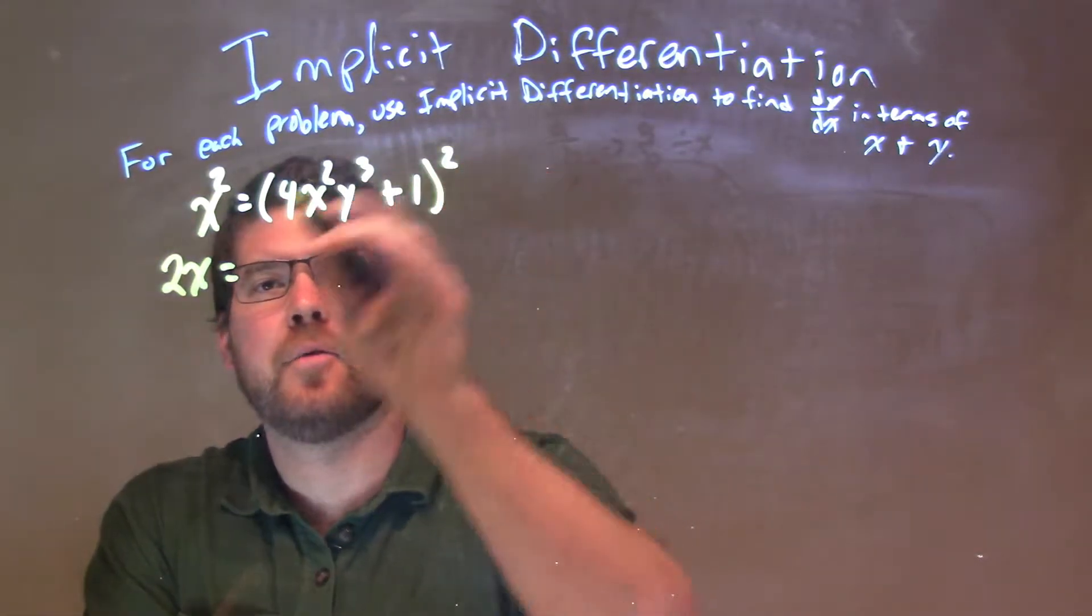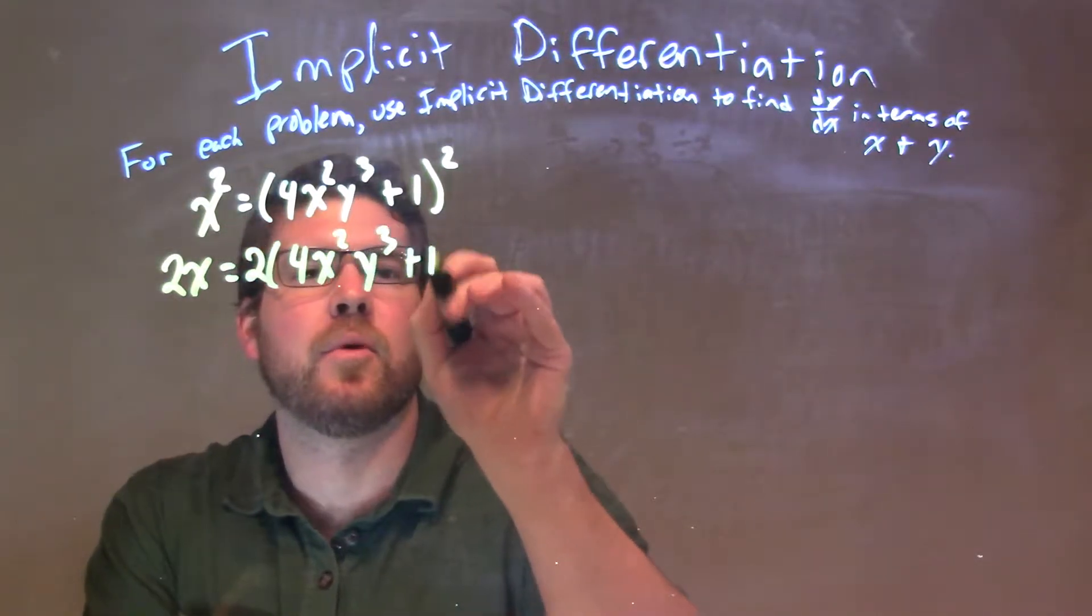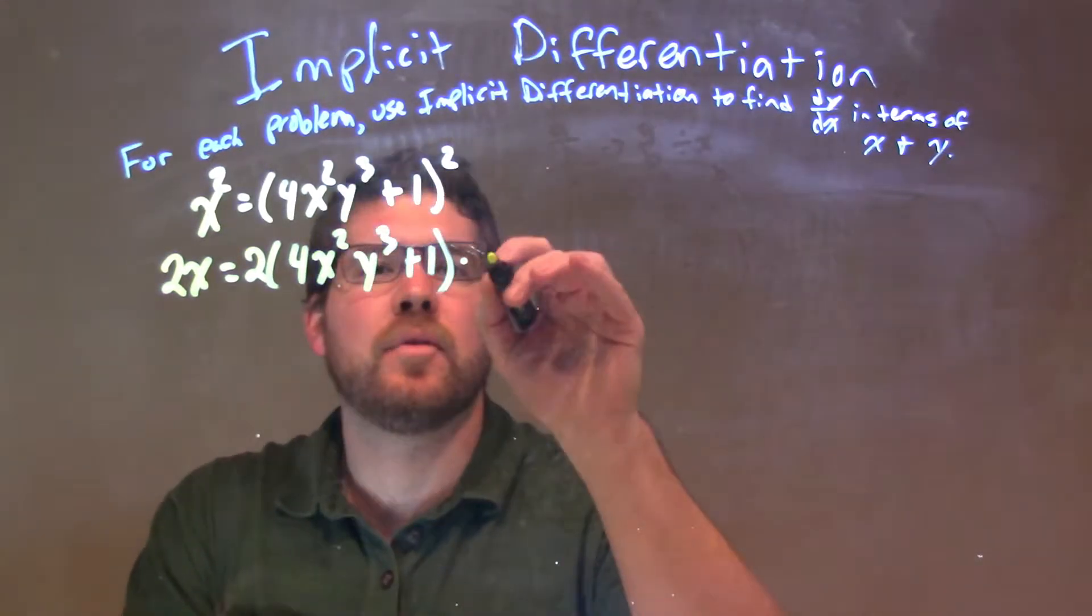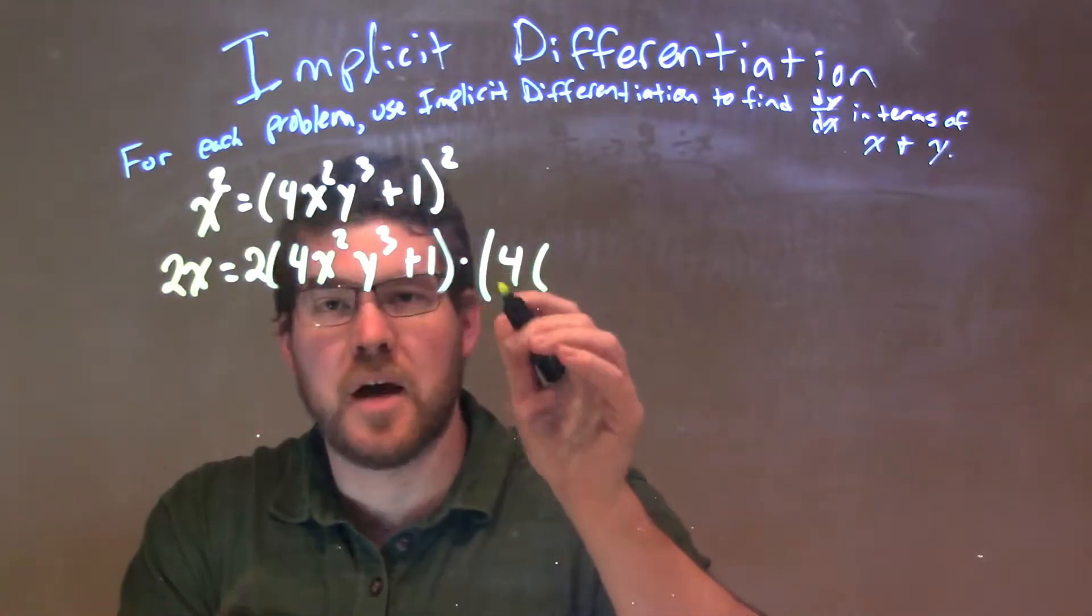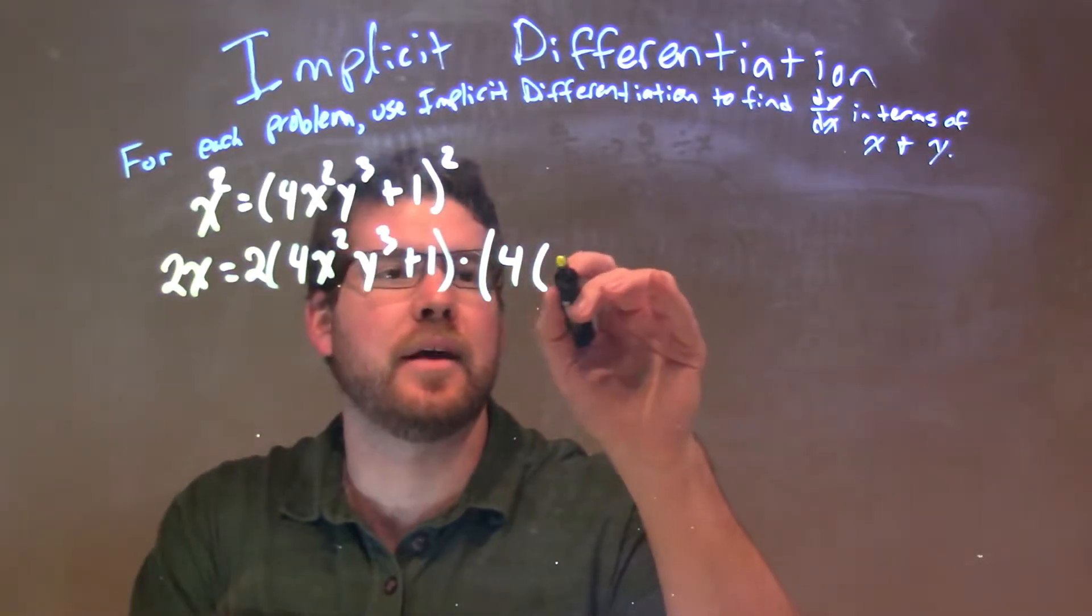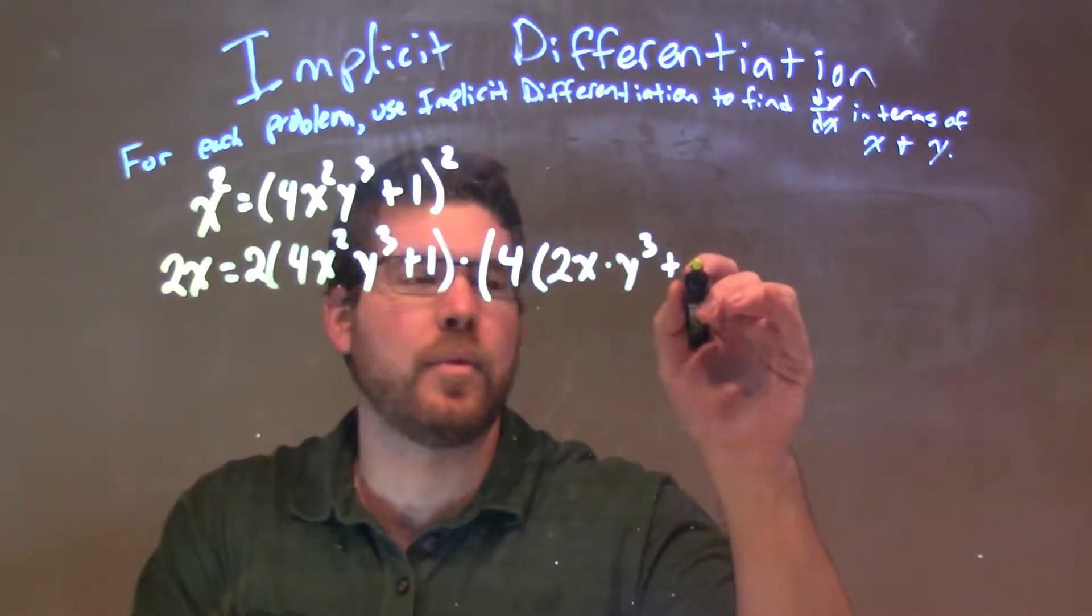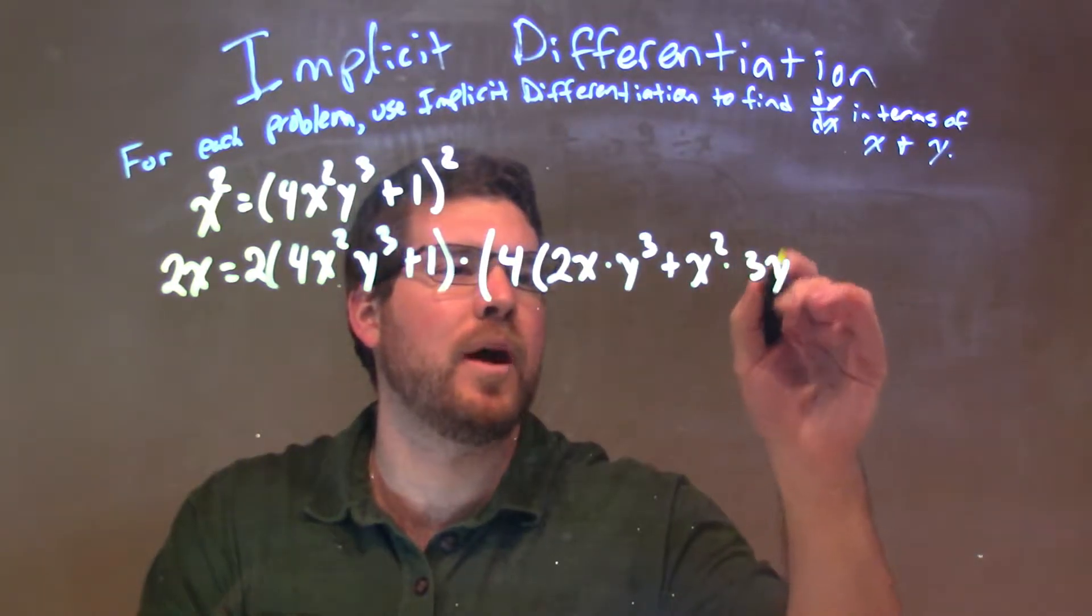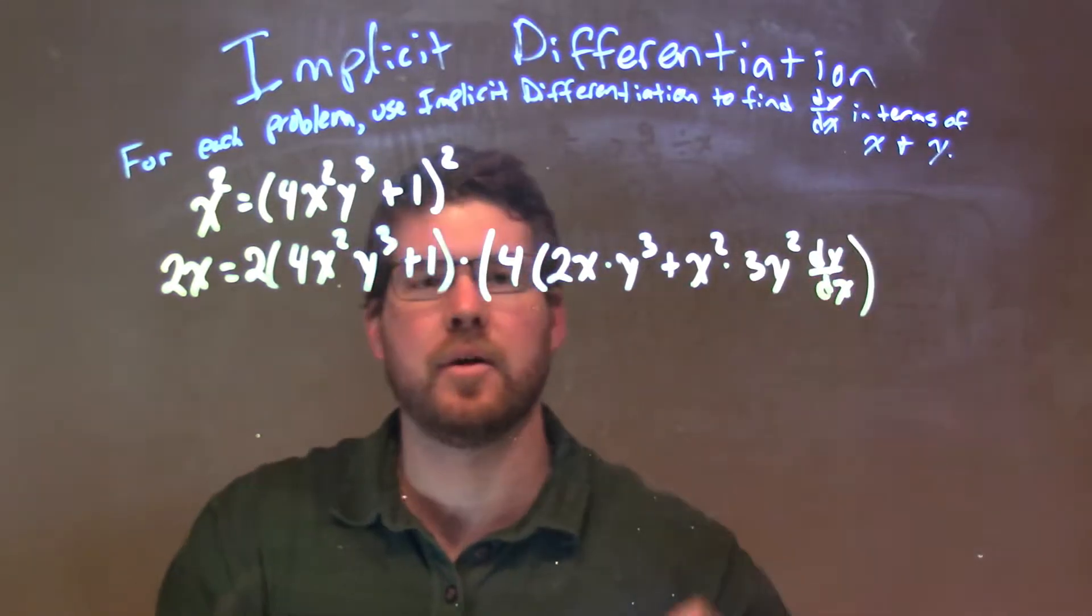Right-hand side, power will come down, by the chain rule, keep the inside the same: 4x squared y to the third plus 1, times the derivative of the inside. Derivative of the inside, I'm going to pull that 4 out as a coefficient: 2x times y to the third plus x squared times 3y squared dy/dx, and then derivative of 1, which is 0. So we're good there.